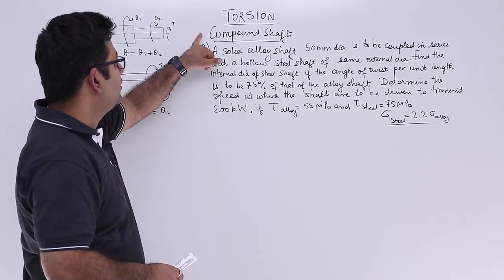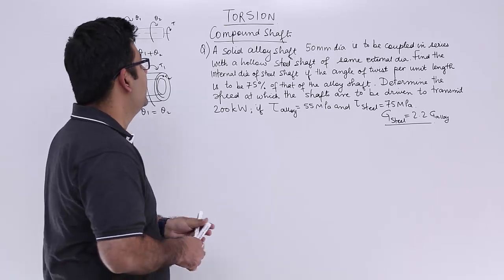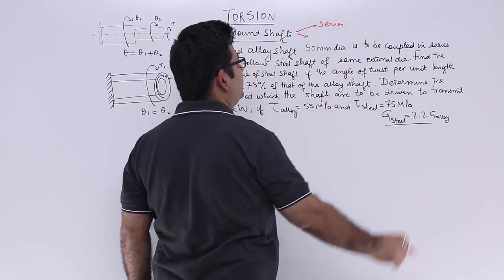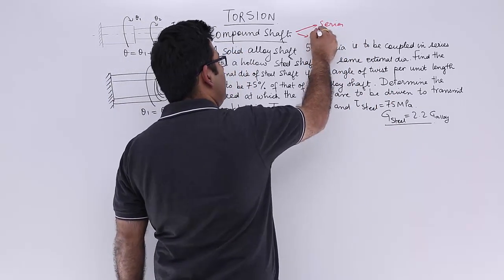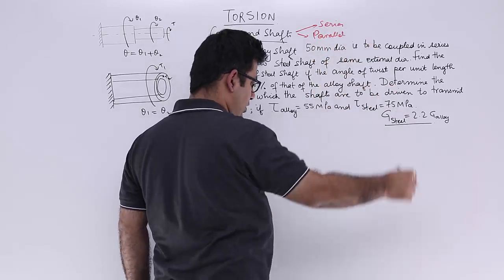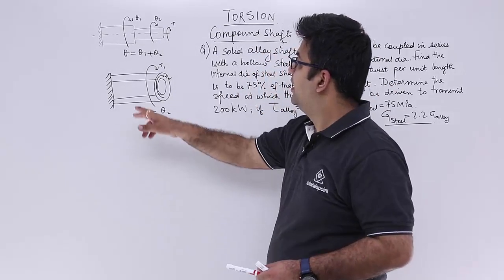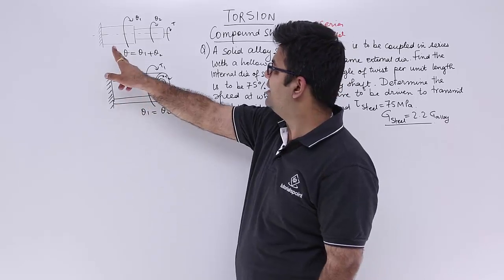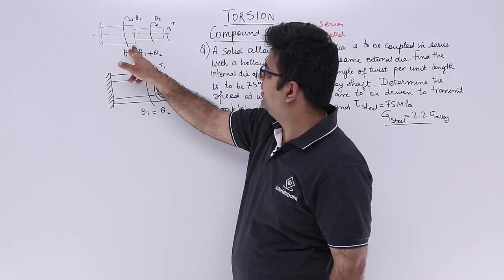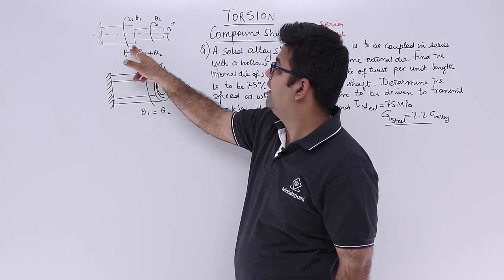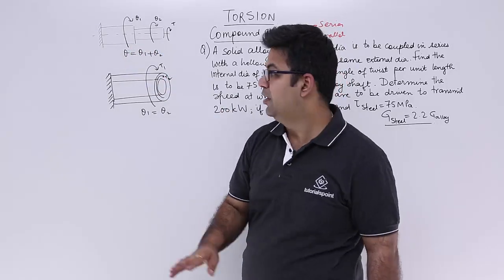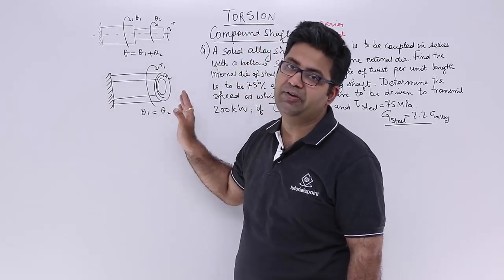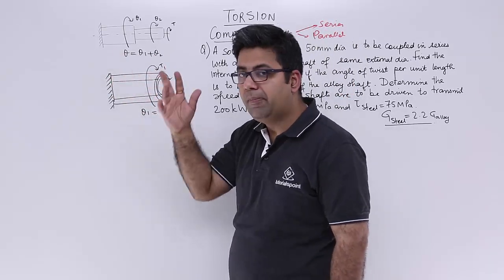In this video we look at compound shafts, that is the combination of shafts. In compound shafts we have two combinations: shafts in series or shafts in parallel. Looking at the two figures, this is how you combine two shafts in series and this is how you combine two shafts in parallel. In series, the final end of one shaft and the initial end of the other shaft are the same. In parallel, the initial end of both shafts is the same and the final end of both shafts is the same.